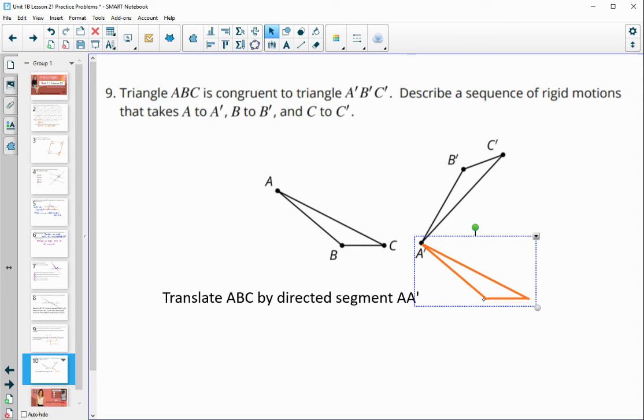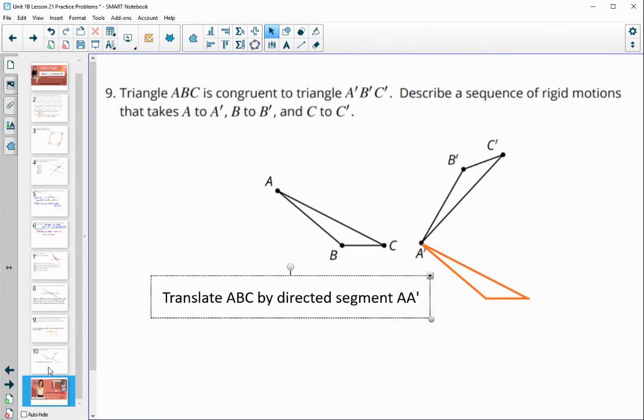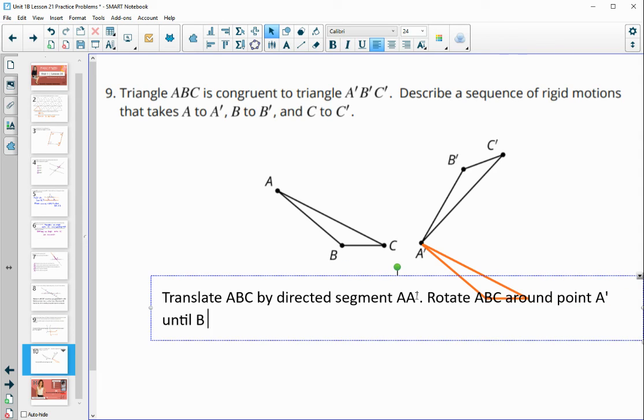And so then we can see here now when we rotate up. So we're going to have to rotate up. And you can rotate whatever point you want. I'm going to stick with alphabetical. So I'm going to rotate triangle ABC around point A prime until B coincides with B prime.